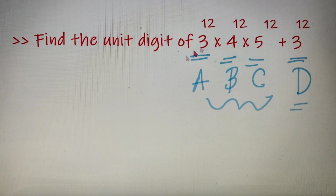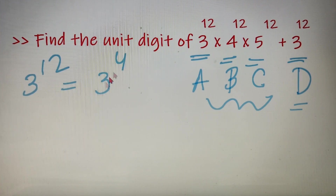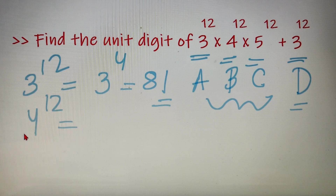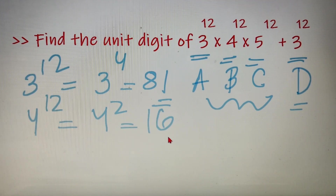First, let's calculate the unit digit of 3 to the power 12. The cyclicity of 3 is 4, so dividing 12 by 4 gives remainder 0. That means 3 to the power 12 has the same unit digit as 3 to the power 4, which is 81, so the unit digit is 1. Moving to the second number, for 4 to the power 12: the cyclicity of 4 is 2, dividing 12 by 2 gives remainder 0, so the unit digit of 4 to the power 12 equals the unit digit of 4 squared, which is 16 — so the unit digit is 6.